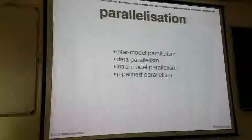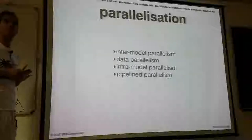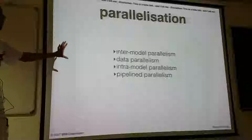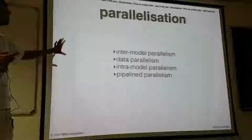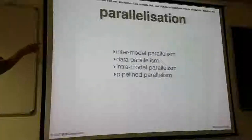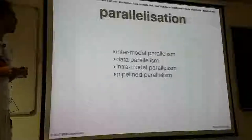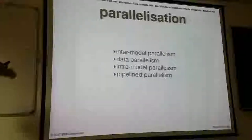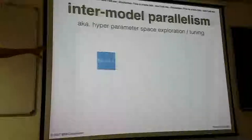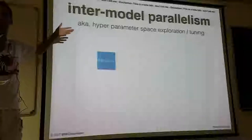Another question is how can we make neural network training and inference faster? There are four paradigms for doing so: inter-model parallelism, data parallelism, intra-model parallelism, and pipeline parallelism. I will cover all four. You have a model and there's the notion of hyperparameters.